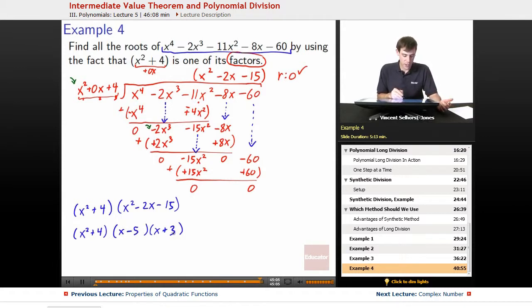We check that. x squared plus 3x minus 5x. Negative 2x. Negative 5 times 3. Negative 15. Great.